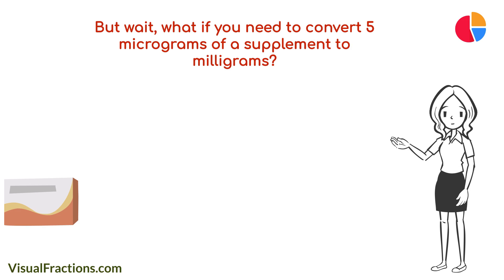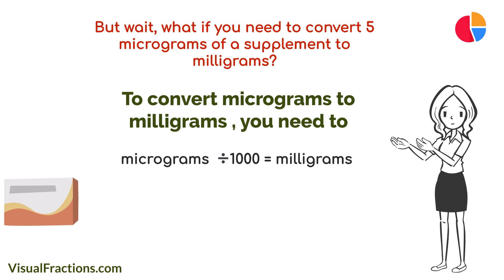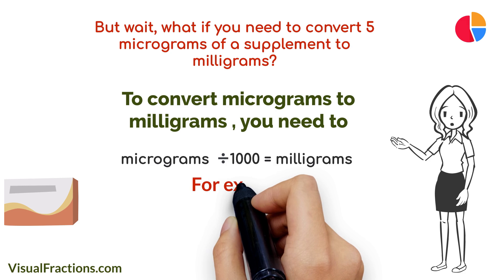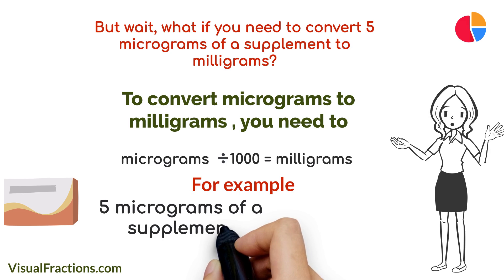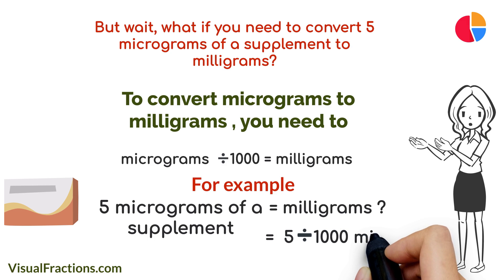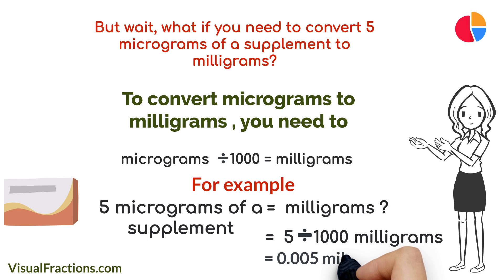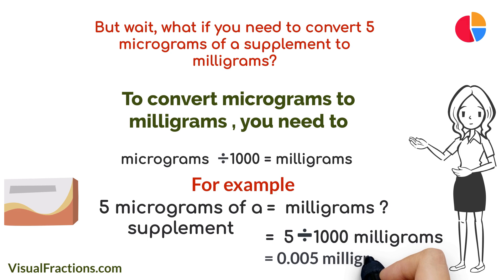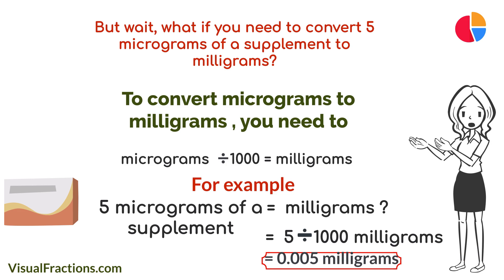But what if you need to convert 5 micrograms of a supplement to milligrams? Don't worry — to convert micrograms to milligrams, you need to divide the number of micrograms by 1000. We start by dividing 5 by 1000. This gives us 0.005 milligrams. So 5 micrograms is equal to 0.005 milligrams.